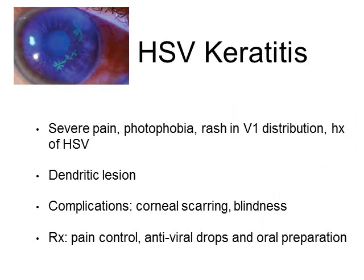HSV keratitis is another emergent condition found in a wilderness setting. Patients usually complain of severe pain and photophobia, and you may notice a rash in the ophthalmic branch of the trigeminal nerve distribution. These patients typically have a history of HSV — this is a reactivation. Fluorescent staining will show dendritic lesions on the cornea. Complications include corneal scarring and blindness; it is one of the most common causes of infectious corneal blindness. Treatment is pain control, antiviral drops or oral preparations, and evacuation.